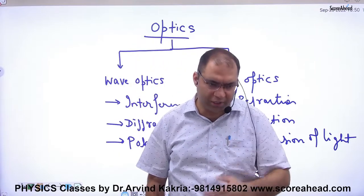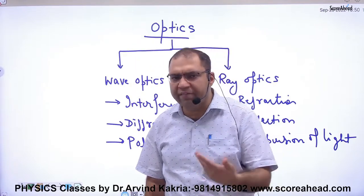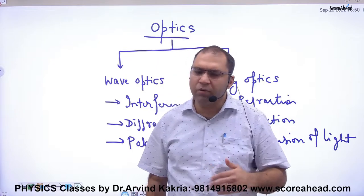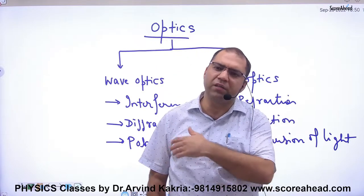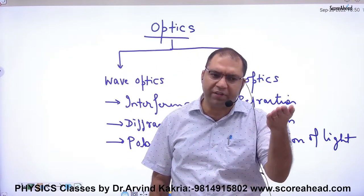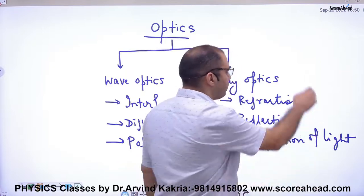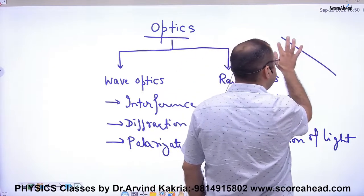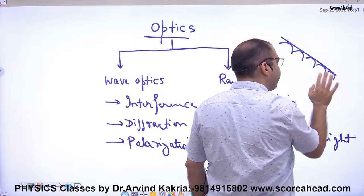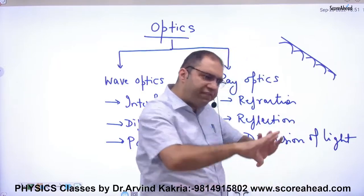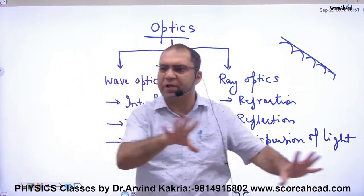Huygens said that the wavefront is not a straight line — it is where many disturbances travel together. He described light as traveling in the form of a wavefront, though he himself didn't fully commit to calling it a wave nature.